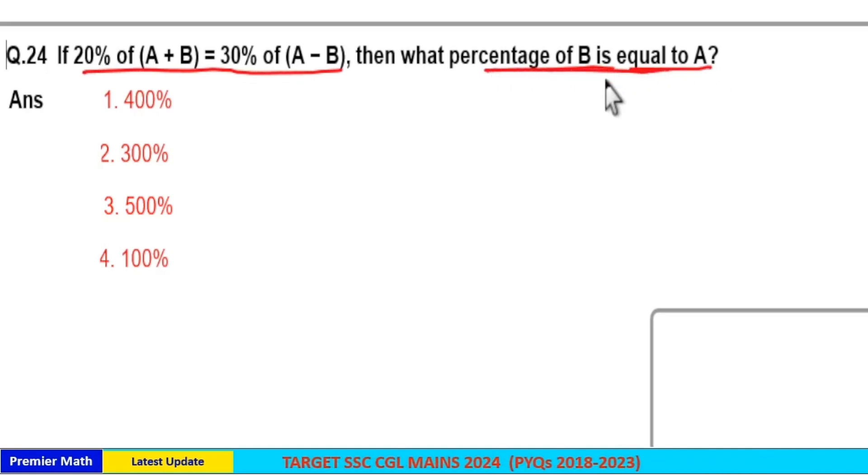What percentage of b equal to a means b should be in the denominator when you convert it into percentage and write a in terms of b.